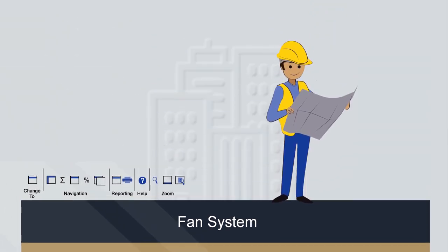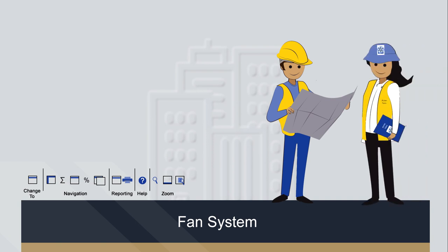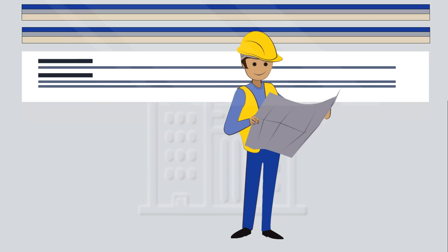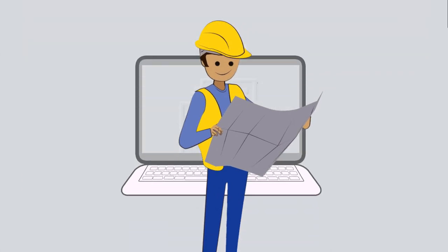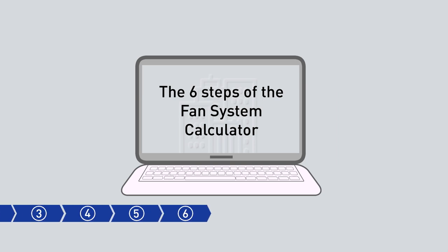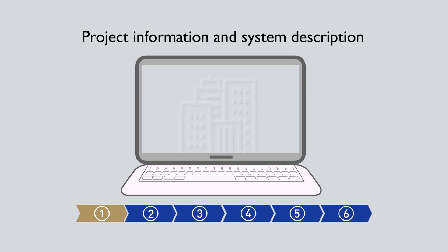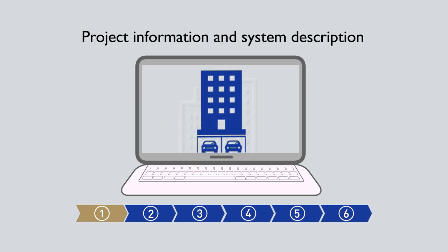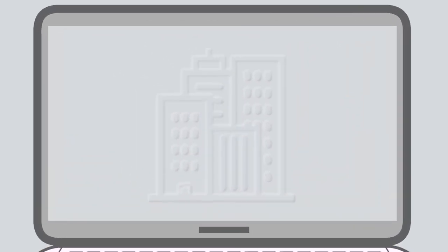Some information will be known by the project engineer, while some will need to be sourced from the fan supplier. This information needs to be checked and verified against the design documentation for compliance assessment. Let's step through the six steps of using the calculator using an example. Step 1: enter the project information and system descriptions.